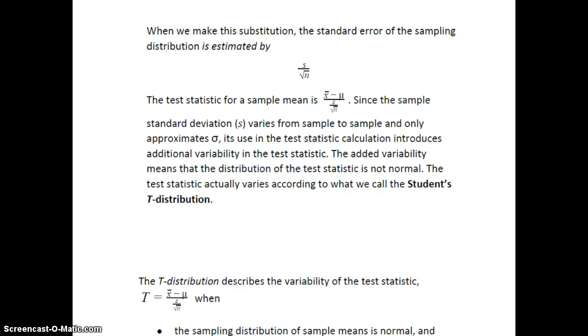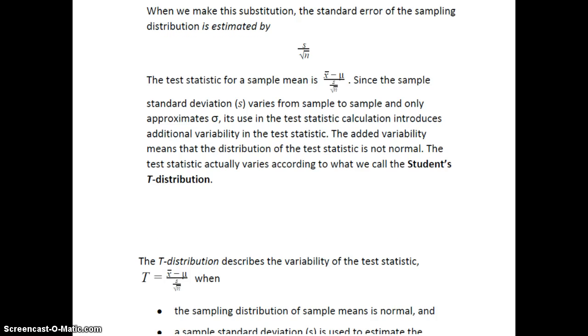Now, since the sample standard deviation varies from sample to sample, whereas the population standard deviation is one value, and it only approximates σ, the population standard deviation, its use in the test statistic calculation introduces additional variability in the test statistic. So, because of this added variability, the test statistic is not normal. The test statistic varies according to what we call the student's t-distribution.